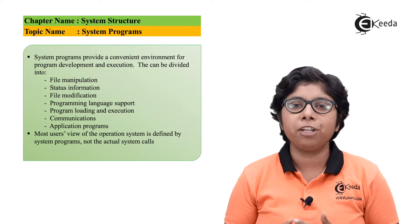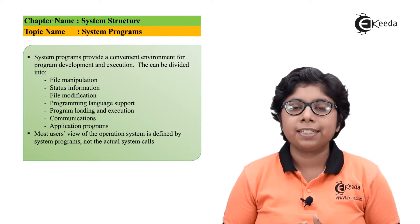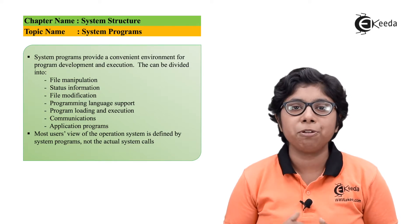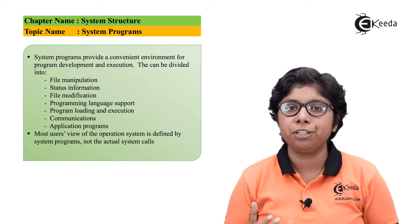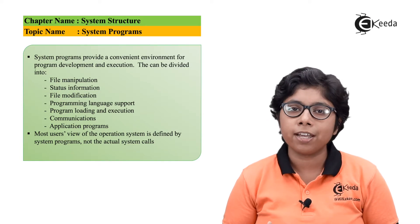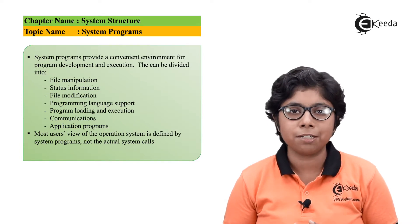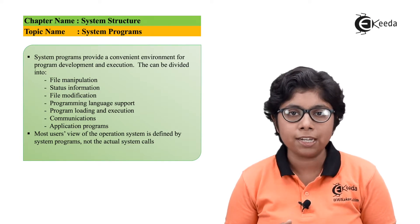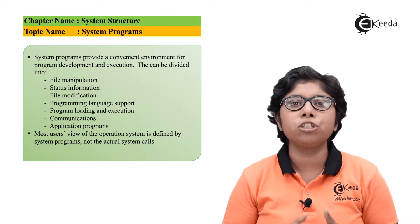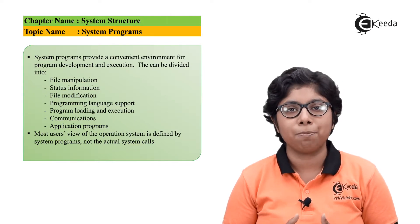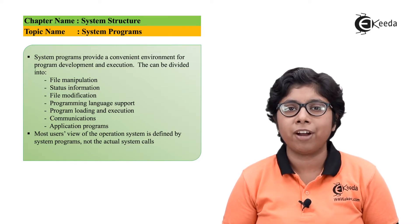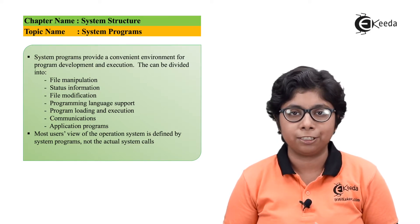The next category is the communication system call. The system must provide some system calls to create virtual communication between users, processes, and computer systems, via which a user can send messages to another screen, search via a web browser, perform remote login, and handle process completion. This allows communication through transferring files to one another.